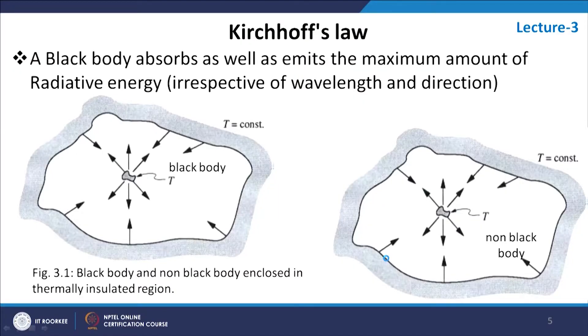The second important law of radiation is Kirchhoff's law. Kirchhoff's law basically gives you a relation between energy emitted by a surface and energy absorbed by a surface. There are many variations of Kirchhoff's law, but this one relates to the black body. A black body, as we have already defined, absorbs maximum amount of radiation — in fact, it absorbs all the radiation that falls on it. Other bodies absorb radiation but less than the black body. What Kirchhoff's law says is that the black body also emits the maximum amount of radiation.